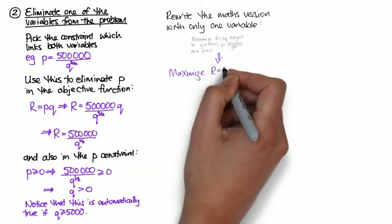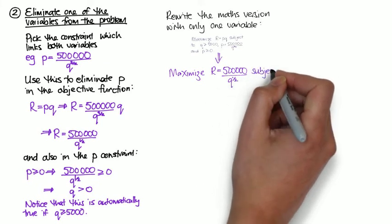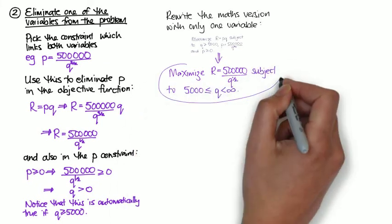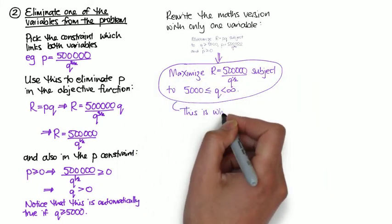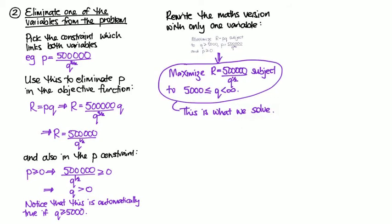Now I take my new versions, and I rewrite the maths version so that it only has one variable. So finally I'm going to maximise r, which is a function of q, subject to a constraint on q.